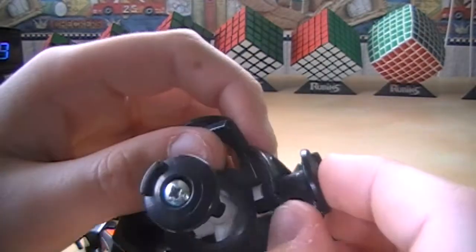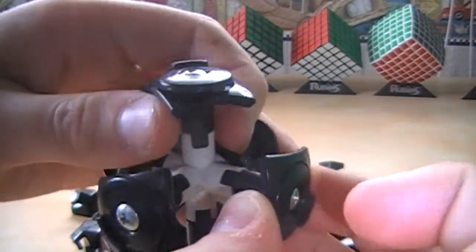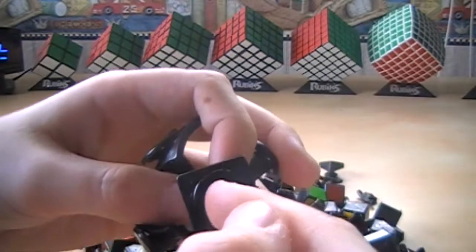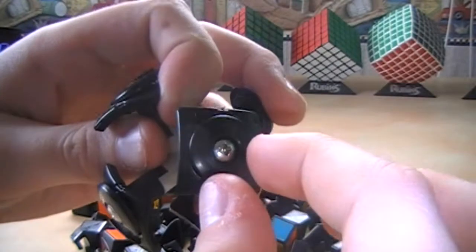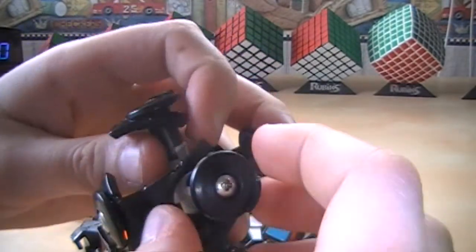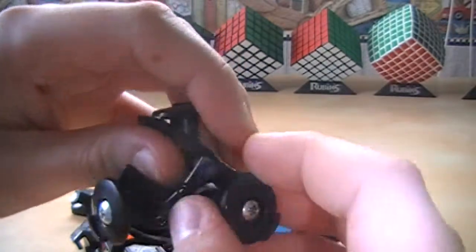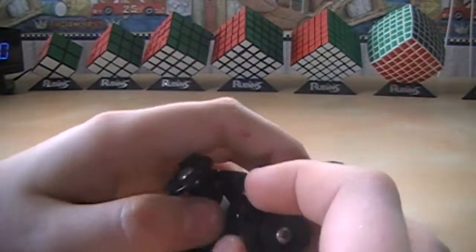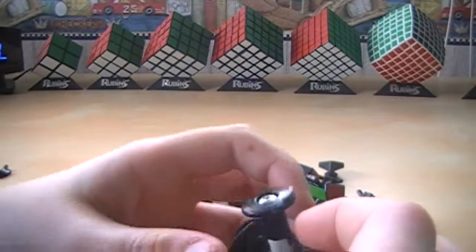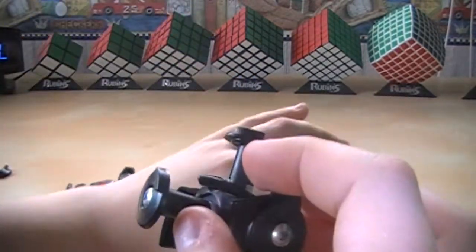So if you want to disassemble the core, or if you're assembling the core for the first time, then you can just unscrew this. Make sure you get the spring in there. And then the screw. And make sure you have one of these things in there. And just screw it in. These different gaps, they're different sizes. So it'll be very hard, if not impossible, to put it in the wrong way.